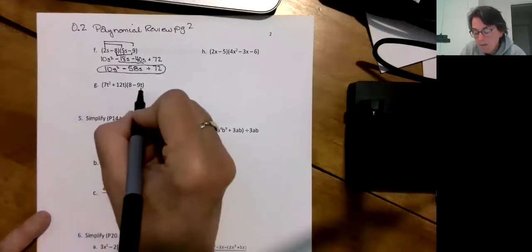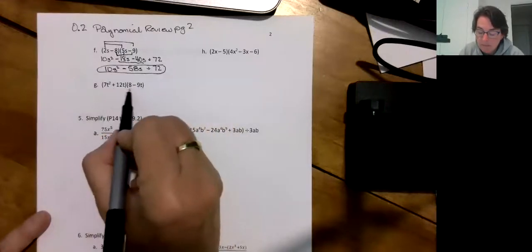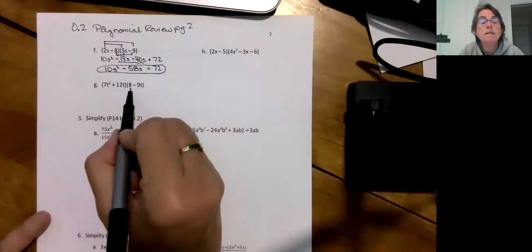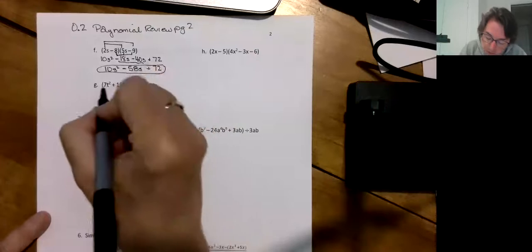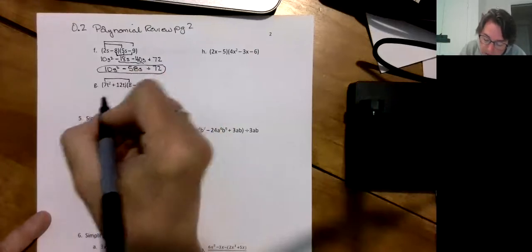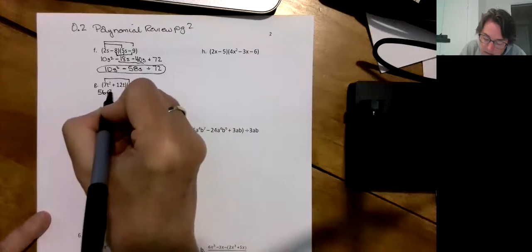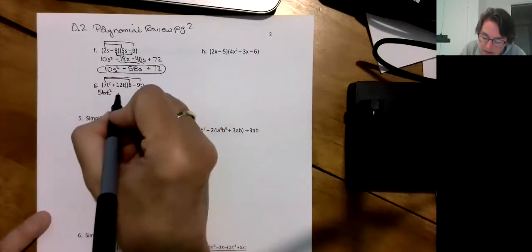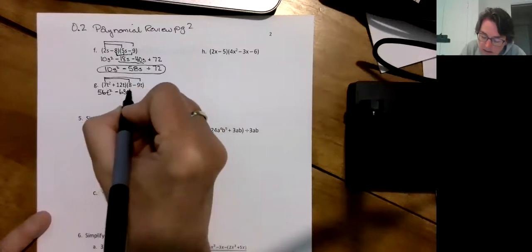Yet another polynomial, binomial times a binomial. But my brain says be a little bit careful because we've got t squared and just a t and then nothing and a t. So you have to be careful with my exponents. 7t squared times 8t is 56t cubed.